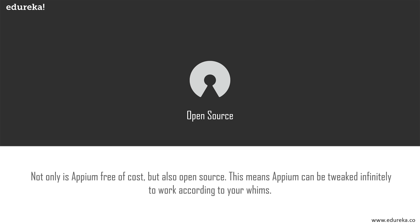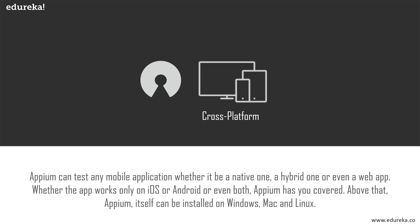The first point is that Appium is free and open source — not only free of cost, but also open source, meaning Appium can be tweaked infinitely to work according to your needs. Secondly, Appium is truly cross-platform: it can test any mobile application whether it be native, hybrid, or a web app, whether the app works on iOS, Android, or both. Above that, Appium itself can be installed on Windows, Mac, and an array of Linux distributions.